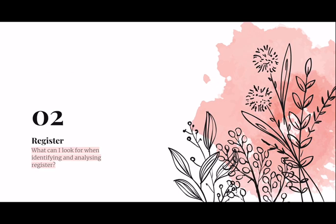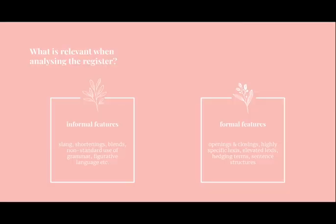For the second paragraph on register, you're predominantly analyzing how formal or informal a text is. You'll be looking for informal or formal features — a quick list of examples is provided, though it's not comprehensive. A useful annotation strategy is to use two colors or symbols as you annotate: one for informal features and one for formal features. At the end, you can visually see whether the register is more formal or informal, and you'll already have examples identified for your paragraph.